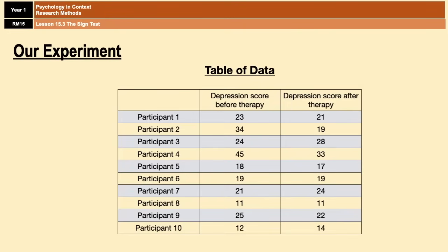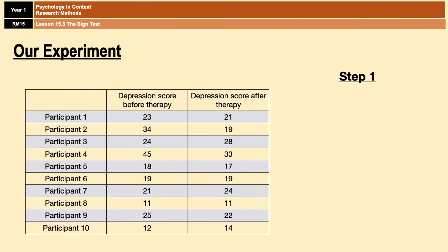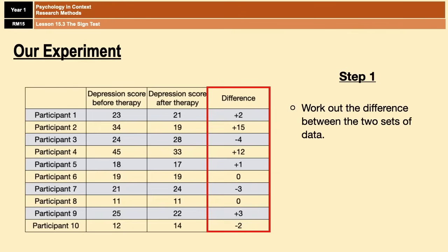These are the results that we got. In the first column you can see the depression score before therapy and in the second column you can see the depression score after therapy. What we want to know now is whether or not the differences in those scores is significant. Step one in conducting the sign test is working out the difference between the two sets of data which involves subtracting one set of data from the other. So after a little bit of maths wizardry, these are my results.